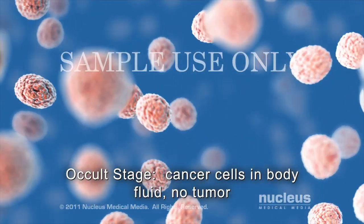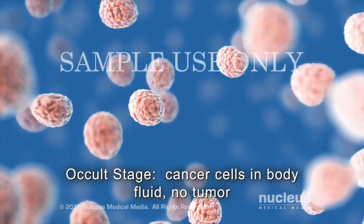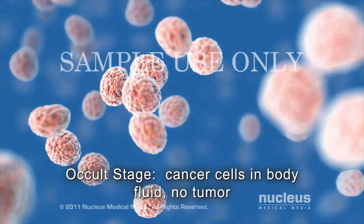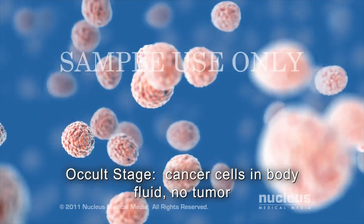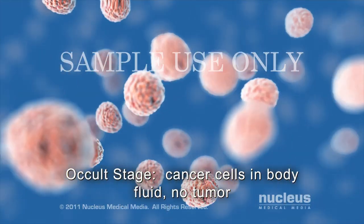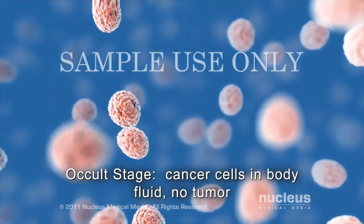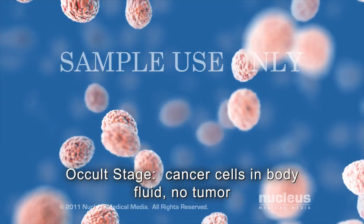In the occult or hidden stage, cancer cells are found in coughed-up mucus or in other lung fluids, but no tumor can be seen in the lungs.